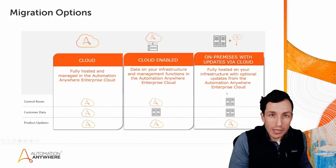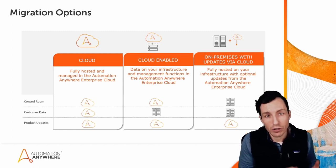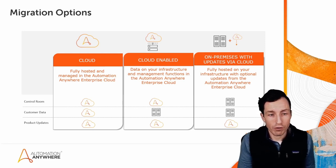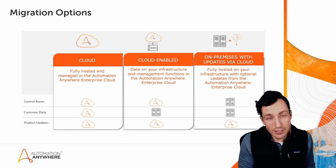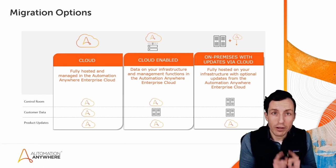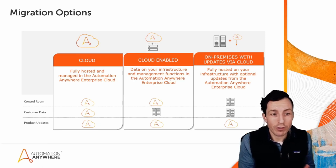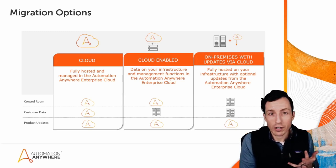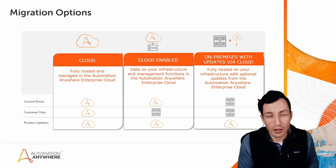Before we get too deep into that, I want to talk about some of the different options if you're a v11 or v10 customer looking to migrate to Automation 360. There are technically three flavors. The first on the far left is a pure cloud Automation 360 environment. This has its own video, but it's a fully hosted and managed Automation Anywhere enterprise cloud environment.